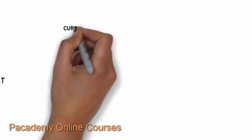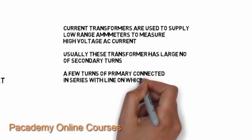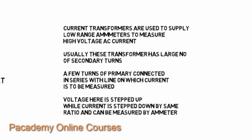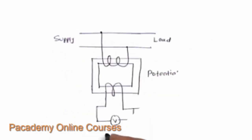The next kind of transformer is a current transformer. These are used to supply a low-range ammeter to measure high voltage AC current. This transformer has a large number of secondary turns while the primary has only a few turns, which is connected in series to the line on which the current is to be measured. The voltage is stepped up on the secondary while the current is stepped down by the same ratio, and it can be easily measured by the ammeter, which is calibrated to measure the current considering the step-down ratio.